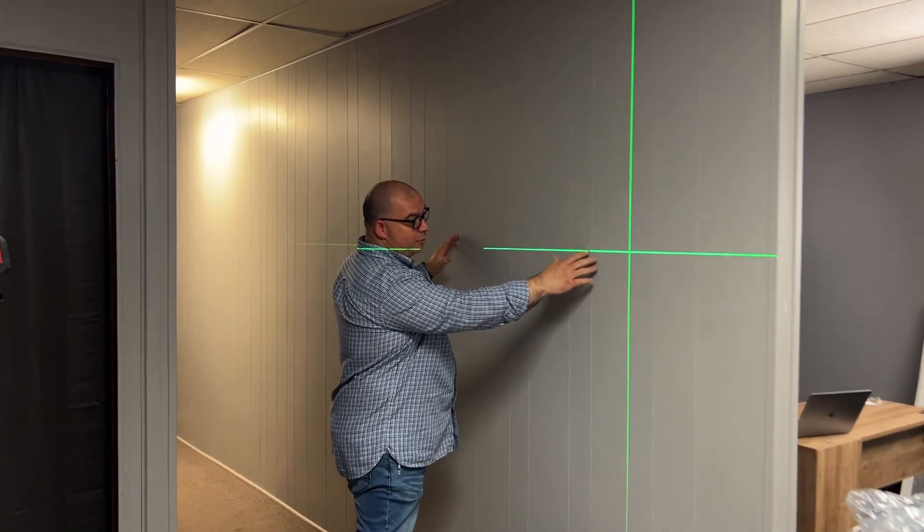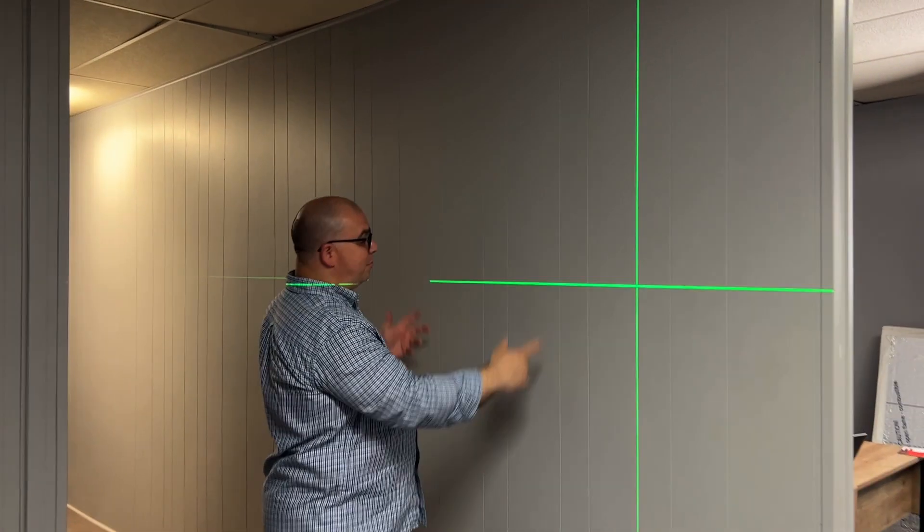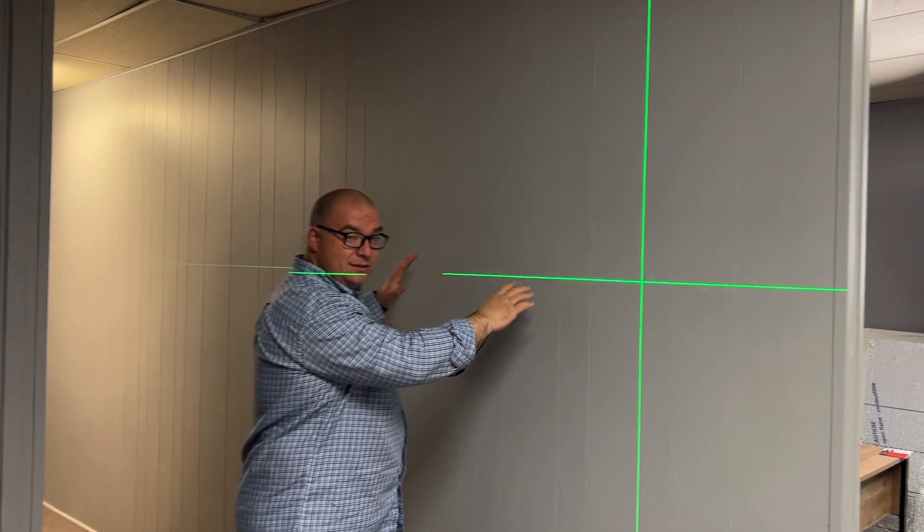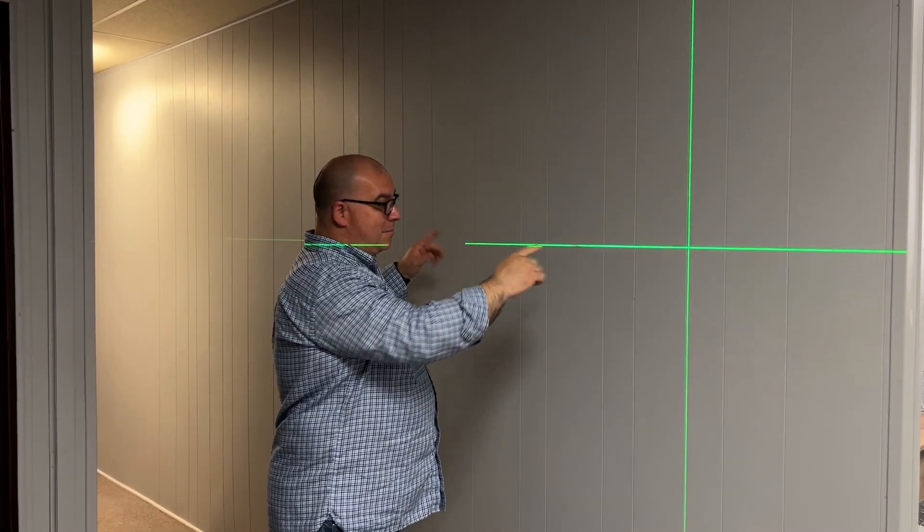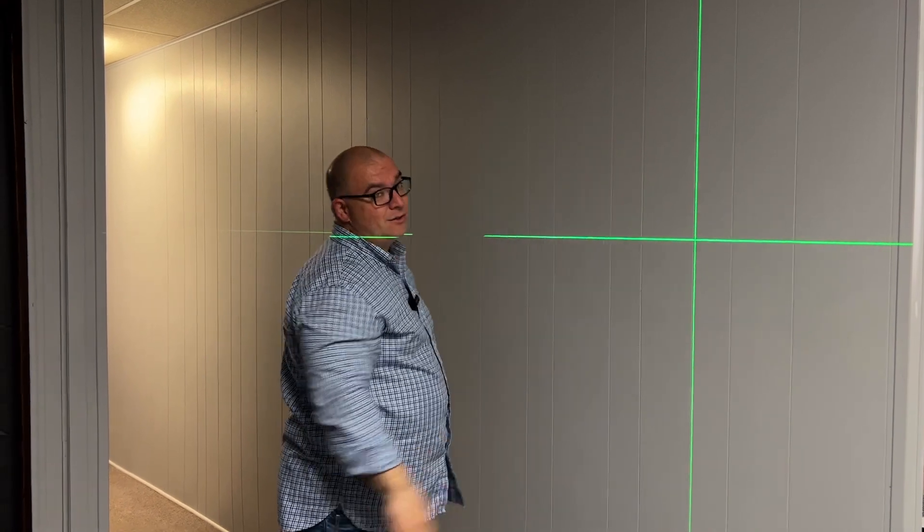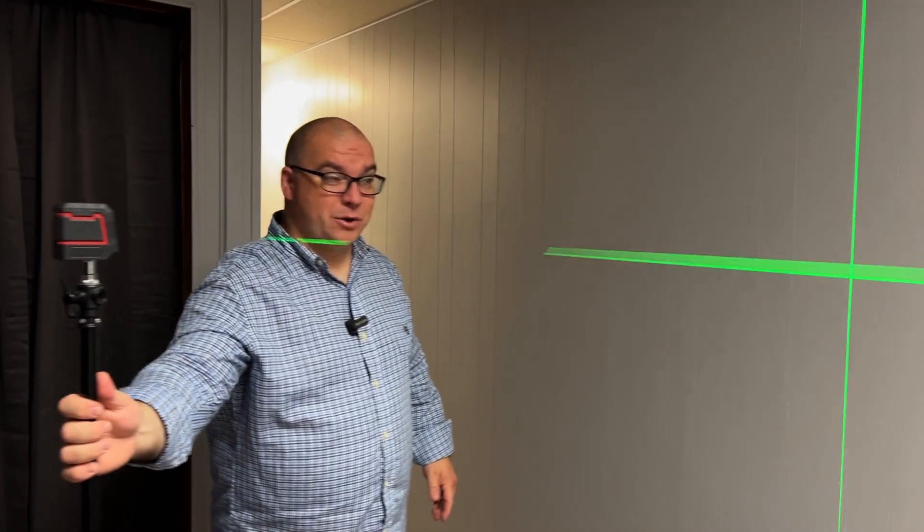So this will work great whenever we get ready to hang shelves or a picture or something on this wall. This will be great to be able to level this and make sure that our screws are actually level before we go to hang something. So I'm excited to use this little level. I think this is pretty handy.